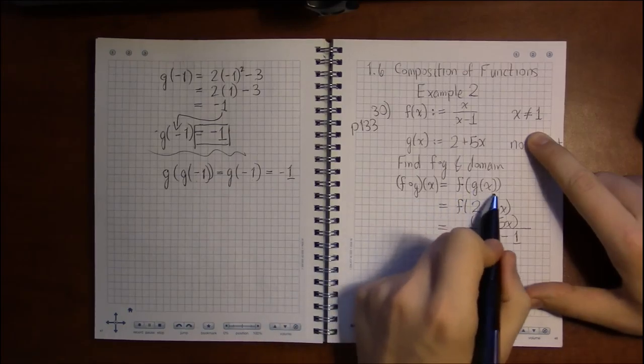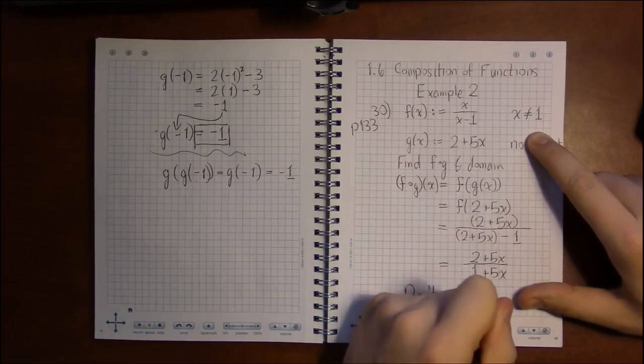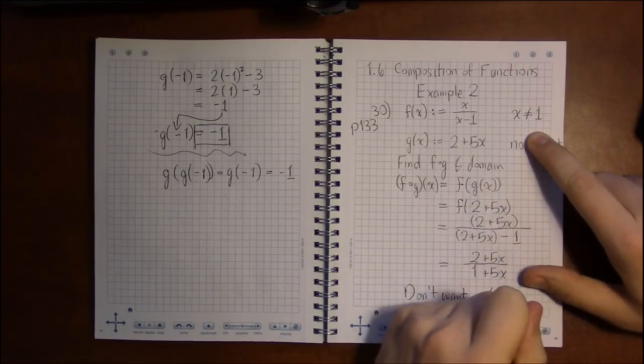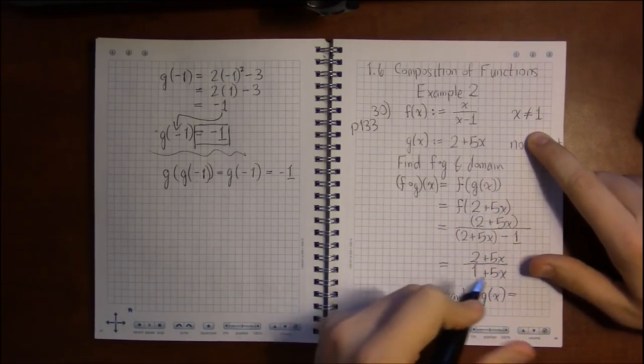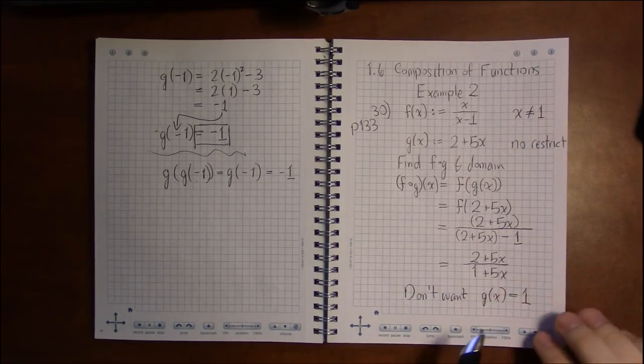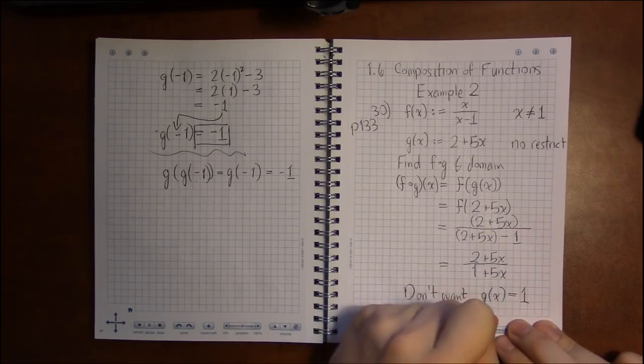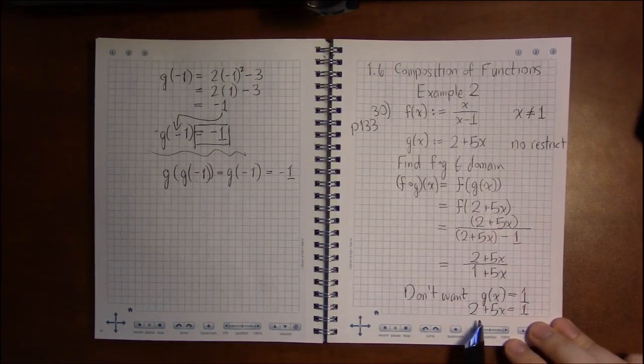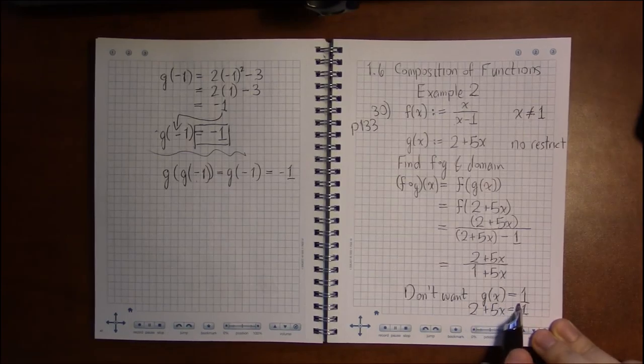What's going into f, g of x, we don't want the input of f to be 1. We don't want g of x to be equal to 1. Well, g of x is 2 plus 5x, and so if we solve this for x, we'll find out all the x values that make g of x equal 1, and so we'll find out all the x values that we don't want.